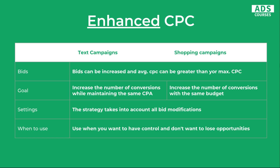I'll start with Enhanced CPC. Enhanced CPC can increase your maximal CPC when there were historical conversions for that keyword recently. Before, Enhanced CPC could increase your bid by maximum 30%; right now there is no limit. The goal of Enhanced CPC is to increase the number of conversions while maintaining the same CPA, or in shopping campaigns, the same budget. The strategy takes into account all bid modifications like mobile, desktop, location, or remarketing.